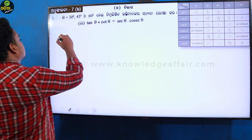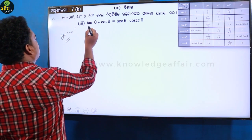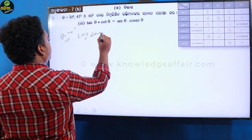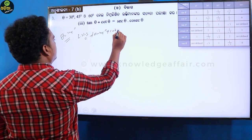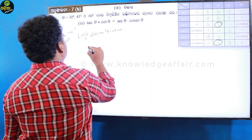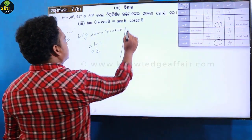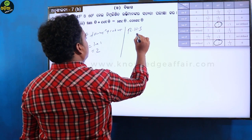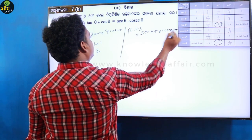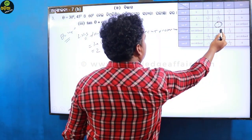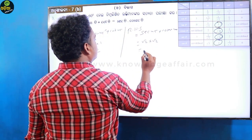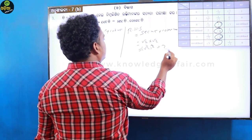Next case: theta equals 45 degrees. LHS: 1 over tan 45 plus cot 45 equals 1 plus 1 equals 2. RHS: sec 45 into cosec 45. The values are root 2 into root 2. Root 2 into root 2 equals root 2 squared equals 2. LHS equals RHS verified.